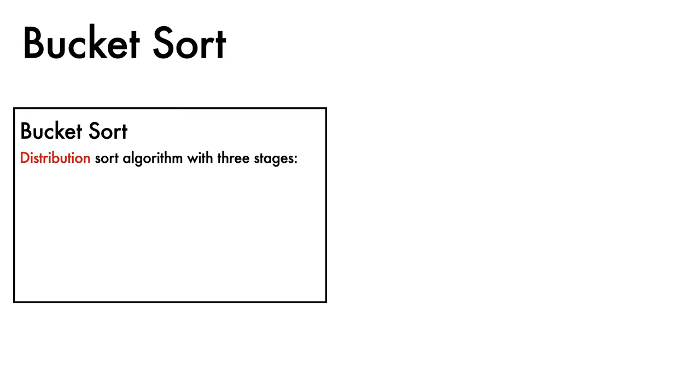BucketSort is a distribution sort algorithm that works in three stages. First, there is a scatter operation that distributes keys to buckets.